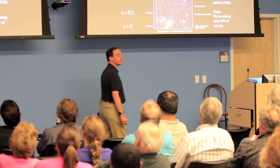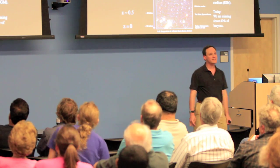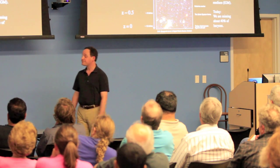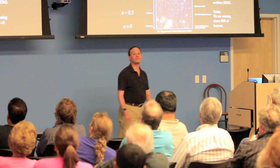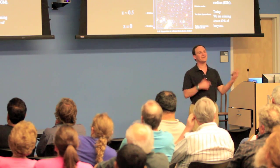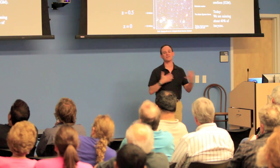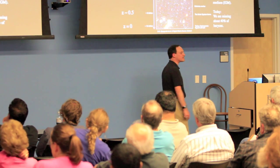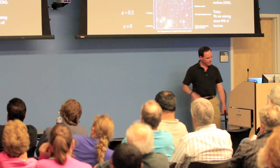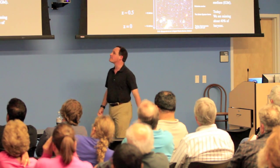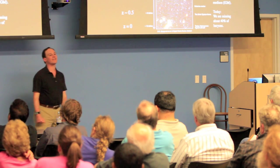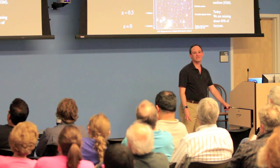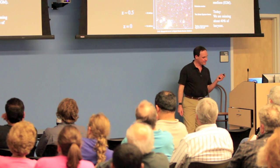In terms of the normal matter in the universe, we know from studies of the cosmic microwave background that when the universe first became transparent, 74% of the baryons were hydrogen and 24% were helium, with trace amounts of deuterium and lithium. Because there hadn't been stars yet, there were no iron, carbon, or oxygen. By a redshift of about 3, most baryons are in the intergalactic medium, mostly hydrogen. By the present day, however, we're missing about 40% of them — we think we know where they are, but we haven't actually observed them.